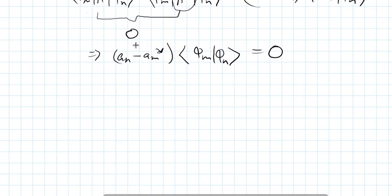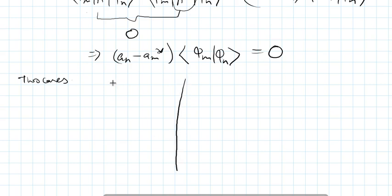Since this expression equals zero, two cases arise. The first case is when m equals n, and the second case is when m is not equal to n.